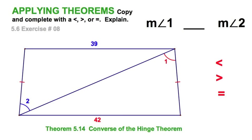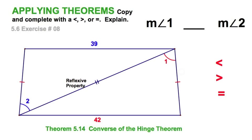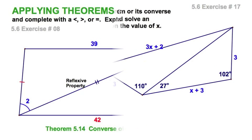This is a job for the converse of the hinge theorem. The reflexive property tells me I've got one side, and I've got my other pair of congruent sides. The opposite red side, opposite the red angle, is bigger than the blue side, opposite the blue angle. So that would tell me which angle has to be bigger — 42 is bigger, that's the opposite angle. Angle one is bigger than angle two.